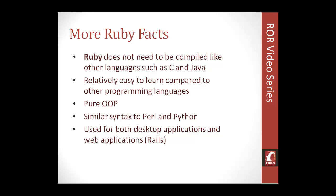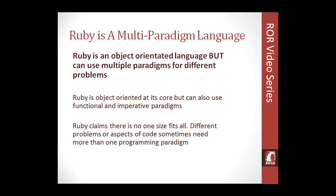The syntax is similar to Perl and Python, so if you know either of those, Ruby should be easier for you to learn. Ruby is obviously used for web applications — that's what this series is about. Ruby on Rails is strictly for web applications, but Ruby itself can also be used for desktop applications and 2D games. It's not as powerful as Java for those purposes, but you can do other things with it.